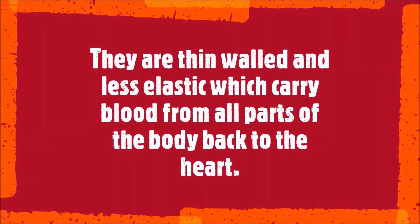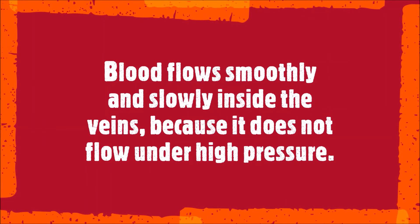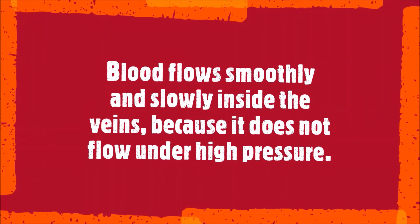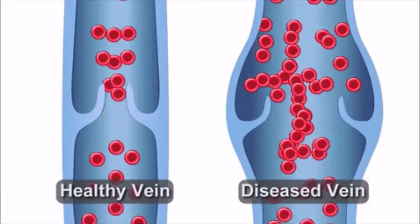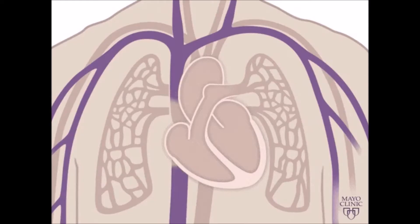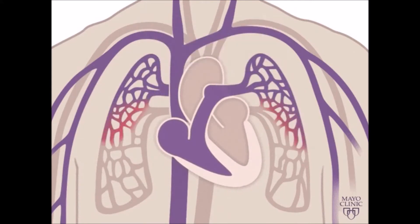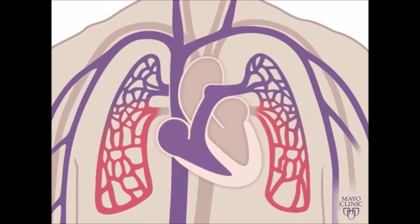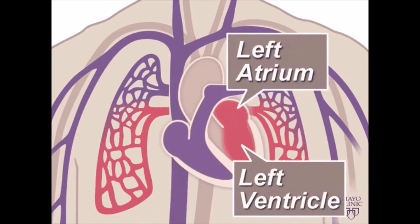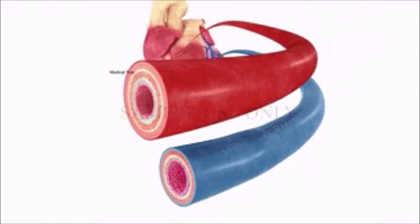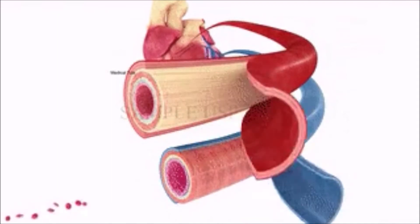Veins are thin-walled and less elastic, carrying blood from all parts of the body back to the heart. Blood flows smoothly and slowly inside the veins because it does not flow under high pressure. Walls in veins prevent the backflow of blood. The main vein, the vena cava, carries deoxygenated blood from all parts of the body except lungs into the heart. The pulmonary vein is the only vein which carries oxygenated blood from the lungs to the heart. Veins have a wider lumen than arteries.